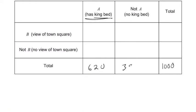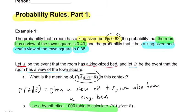So 380 don't, right? Because 620 plus 380 is 1,000. And now we're getting somewhere. We're cooking, right? Let's go to the next probability.